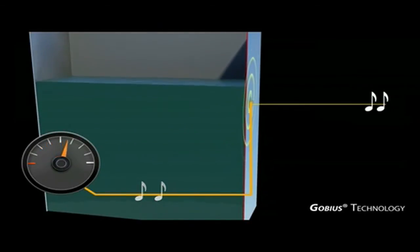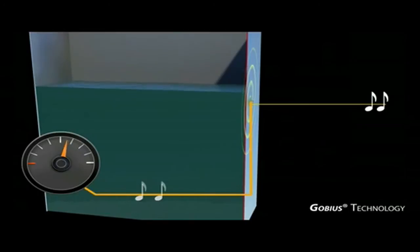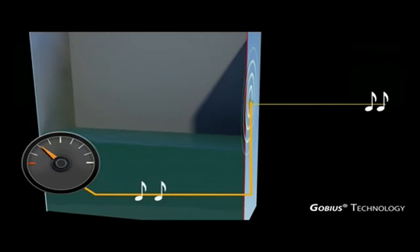The best part of Gobius is that it is easy to install. Usually when measuring you need to drill holes in the tank wall. With Gobius this is unnecessary since it measures from the outside.